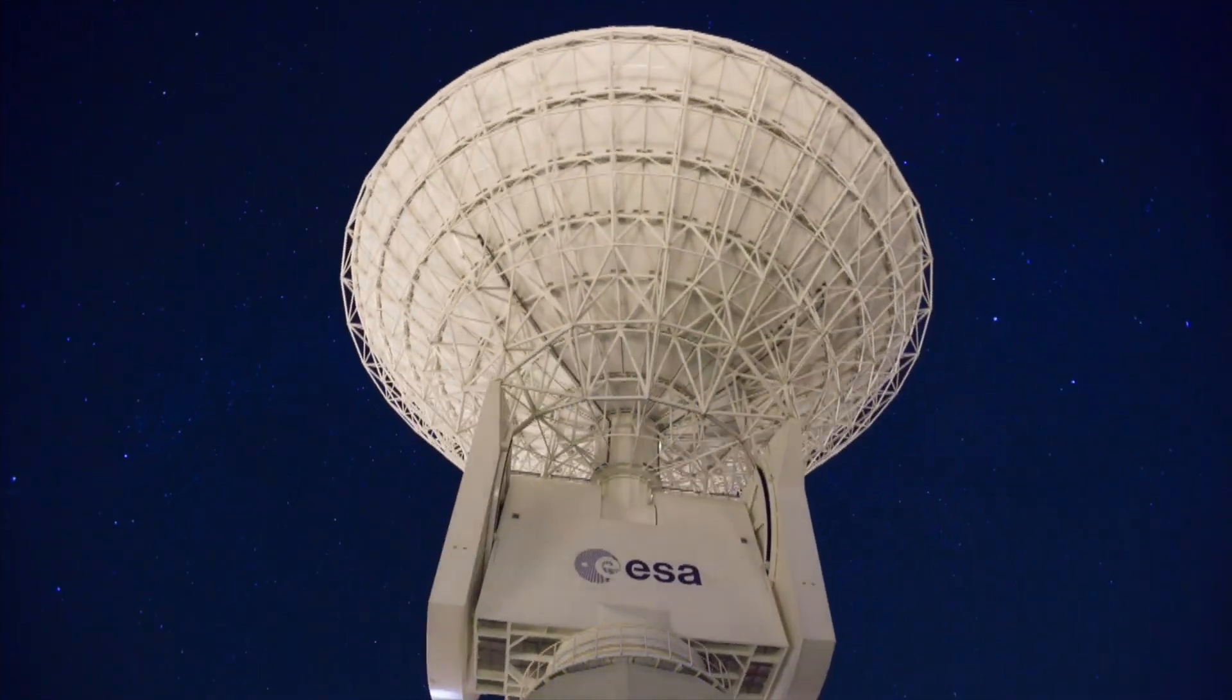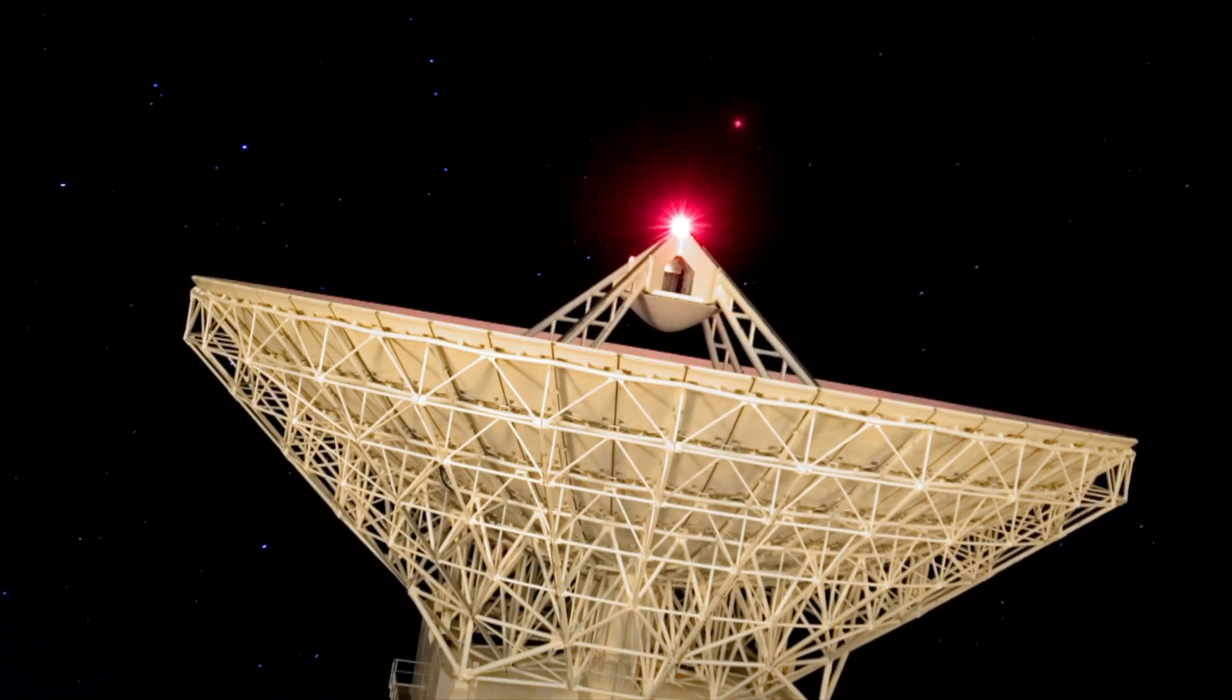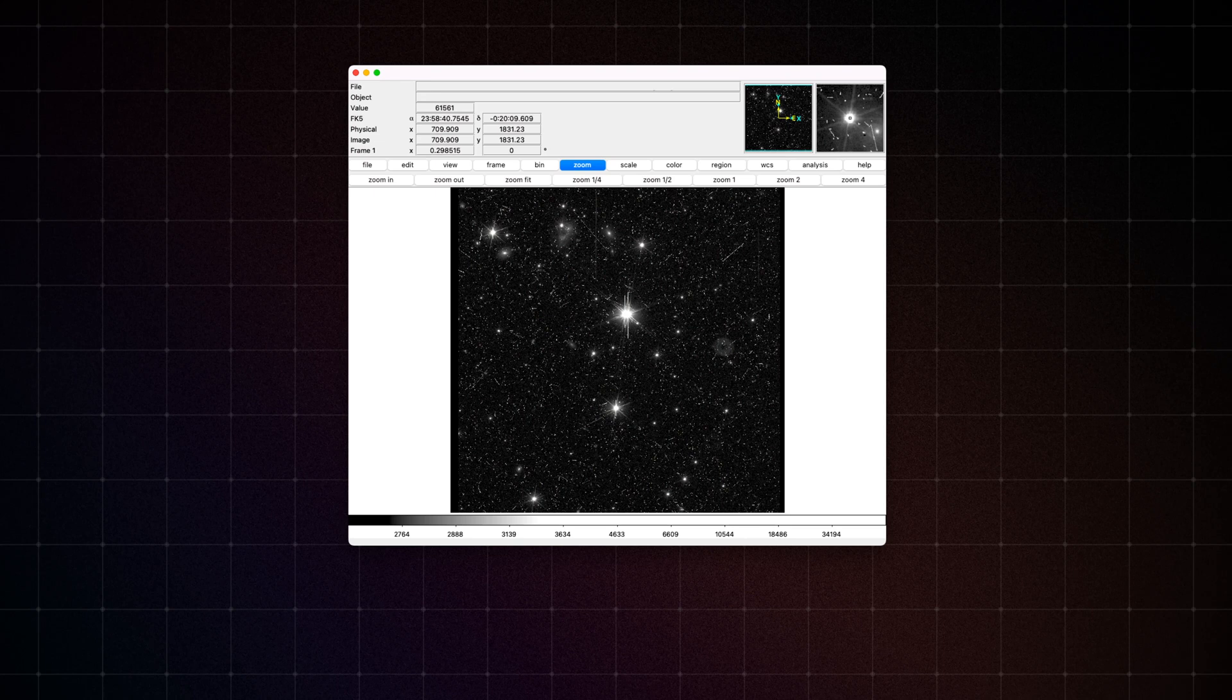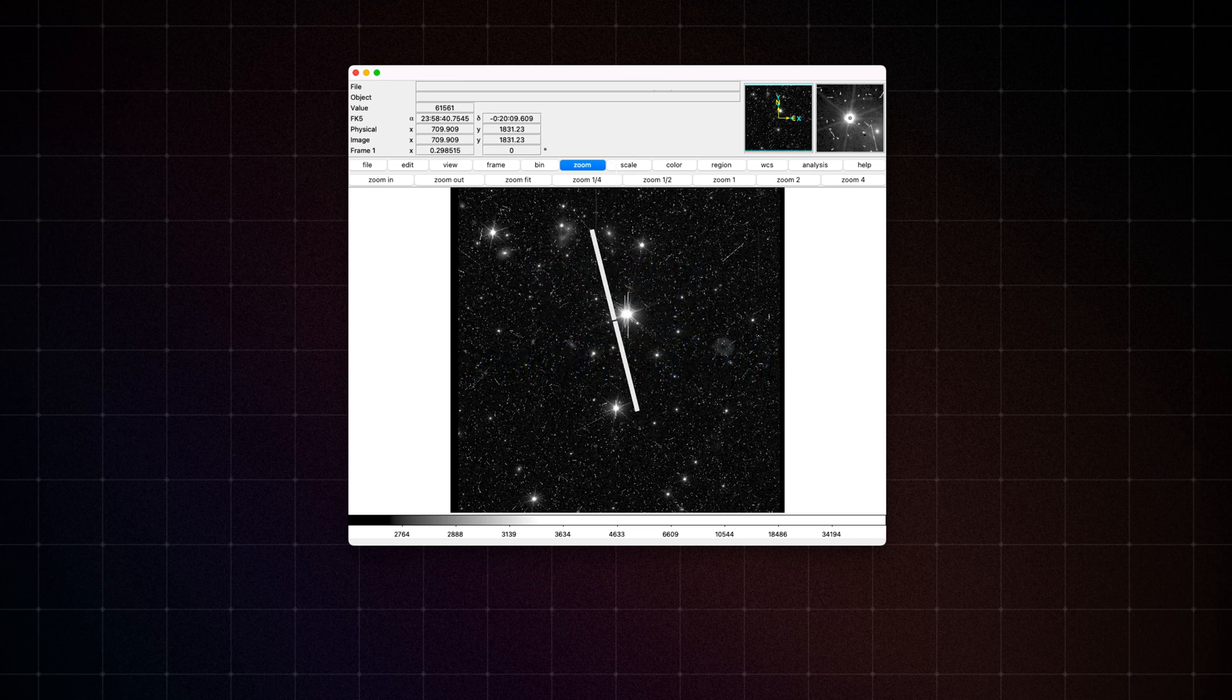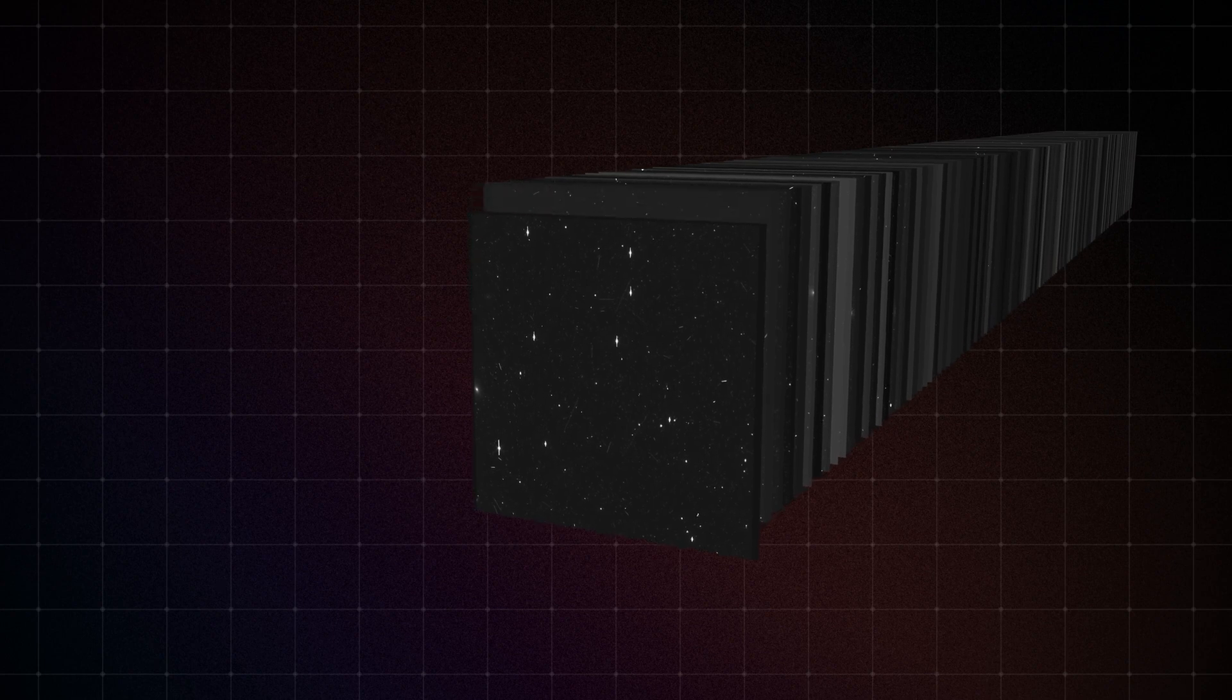Euclid sends approximately 100 GB of observational data each day to deep space antennas on the ground. The data is stored in a special file format used by the astronomy community called FITS, similar to an image format. While a FITS file might contain just one image frame, it can also hold multiple frames.